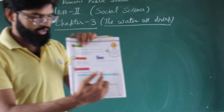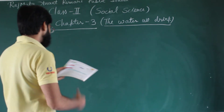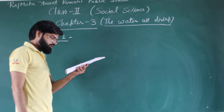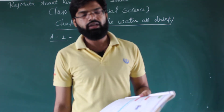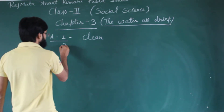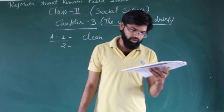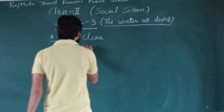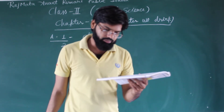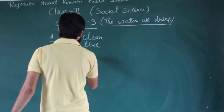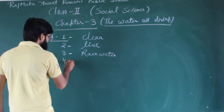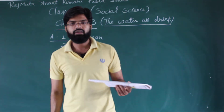In the exercise, check your books. True or False: First — clean water. Second — we all need water to live. True. Three — rainwater is the most important source of water. True. Four — we should always save water. True.